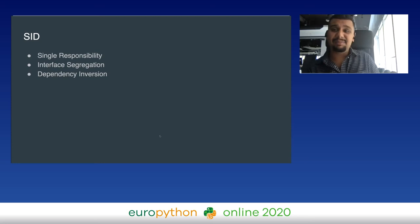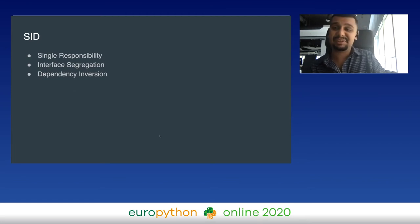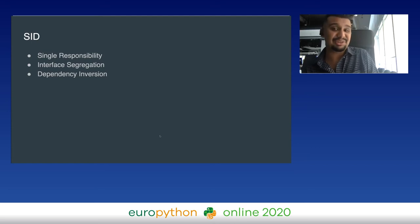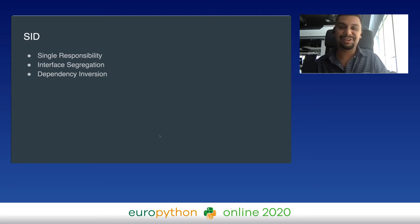The SID principle says a class should have one and only one reason to change — one class should only serve one purpose. This does not imply that each class should have only one method, but all methods should relate directly to the responsibility of the class. A client should not be forced to implement an interface it doesn't use — this means we should break our interfaces into smaller ones so they better satisfy the exact needs of our clients. Similar to the single responsibility principle, the goal of interface segregation is to minimize side effects by dividing software into multiple independent parts. Depend on abstractions, not on concretions. By applying dependency inversion, modules can be easily changed — high-level modules will not be affected by changes to low-level modules.